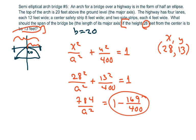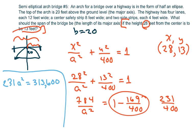And this right here equals 231 over 400 and you cross multiply and you're going to get, I'm going to put it over here sorry I'm running out of room, 231 A squared equals 313,600. So A squared if you divide both sides by 231 you get 1357.576 so A is 36.843.